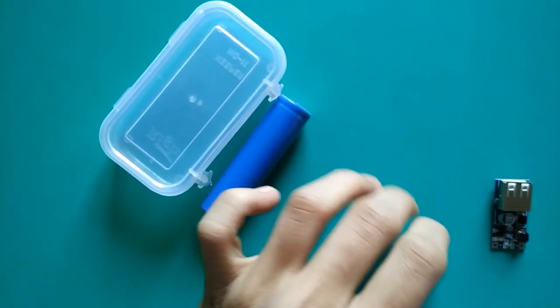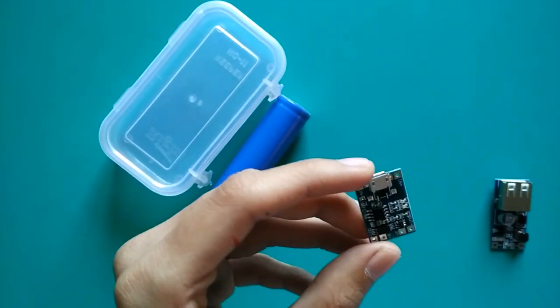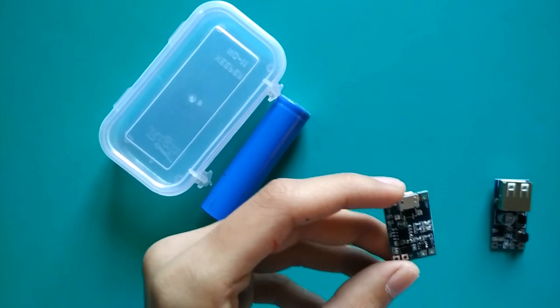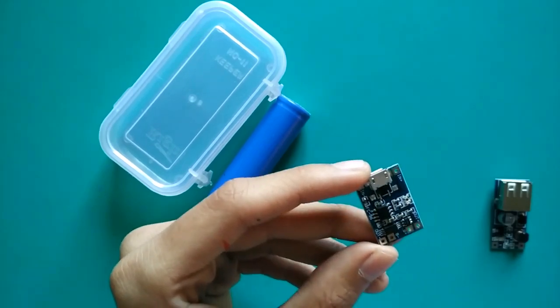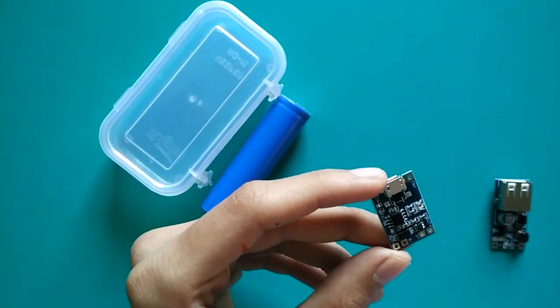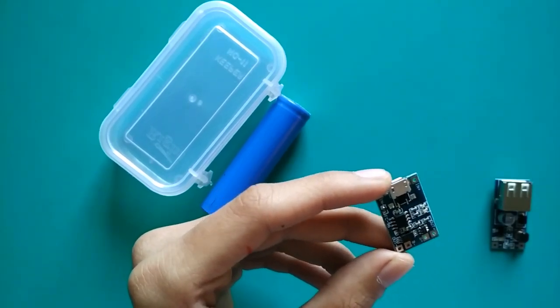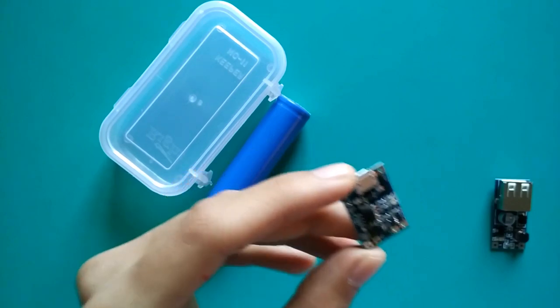Our next component is this charging module. This is a 1A TP4056 lithium ion battery charger with protection circuit inbuilt. The protection circuit will avoid over discharge as well as over charge of the 18650 battery.